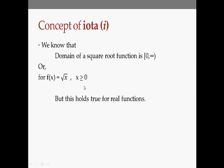There is one point to note: this holds true only for real functions. What this means is that when I say x should be greater than or equal to 0, I intend to make f a real-valued function. So what happens to the square root of x when x is less than 0 — when it is negative?